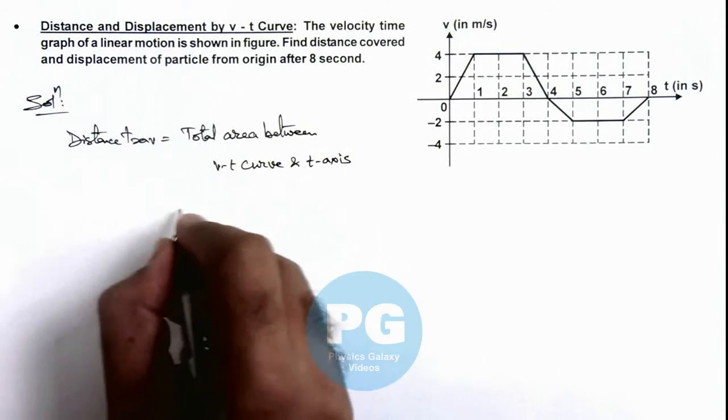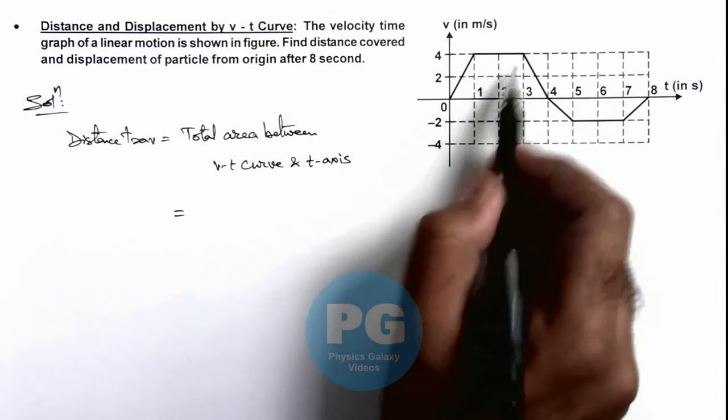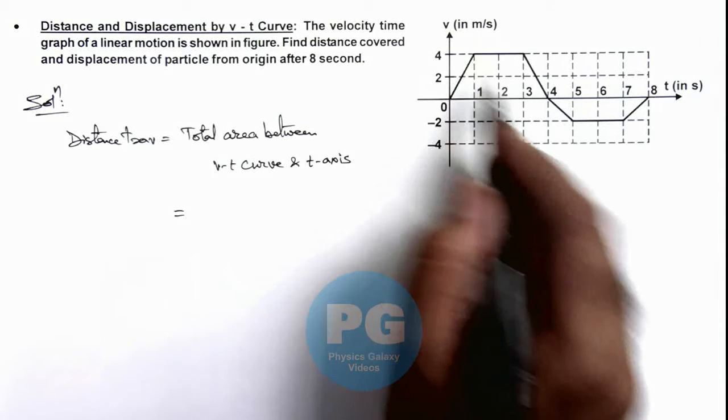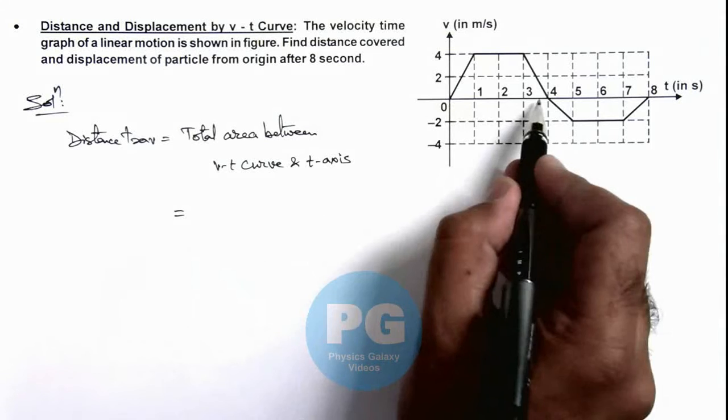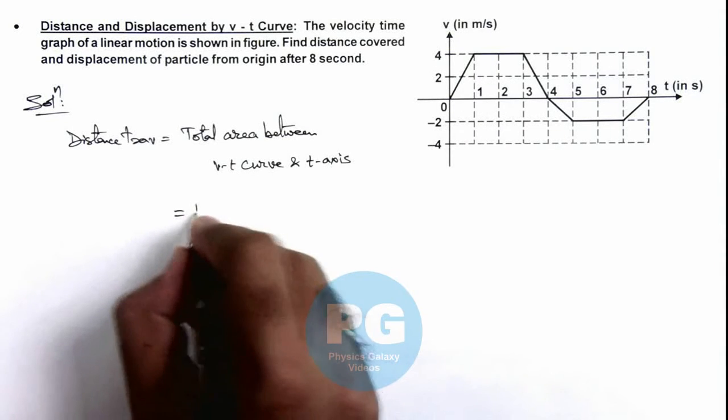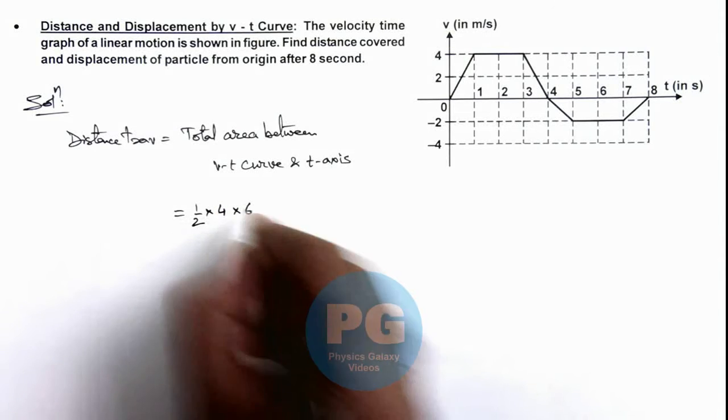In this situation we can see the area of this trapezium. We can calculate its height is 4 and the sum of parallel sides is 4 plus 2, which equals 6. So we can write it as 1/2 × 4 × 6.